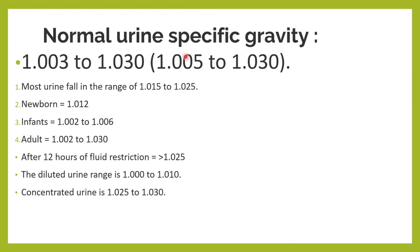What is normal urine specific gravity? Normal urine specific gravity is between 1.005 to 1.030, but to make it easy we always say 1.003 to 1.030. It will change in newborns, infants, and adults, but this is the normal reference range.